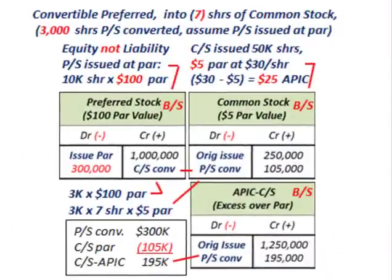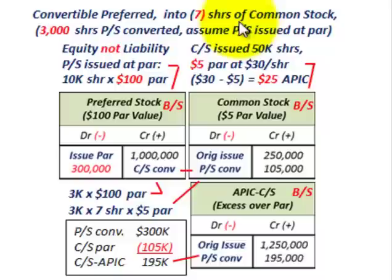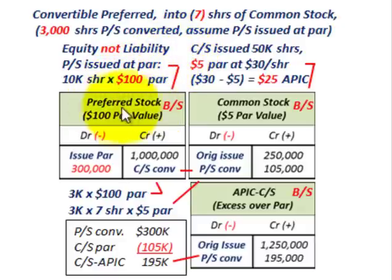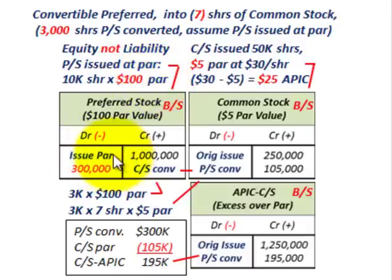Now let's look at the convertibility feature and go through a basic example. With convertible preferred, we're going to convert preferred stock into seven shares of common stock, and there will be 3,000 shares of preferred stock converted. We'll assume the preferred stock was issued at its par amount for easy calculations. The preferred stock was originally credited at $100 par amount for 10,000 shares, giving us $1,000,000 sitting on our balance sheet as equity.